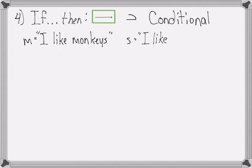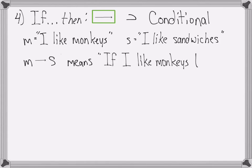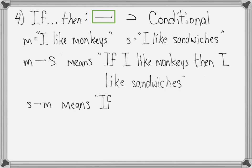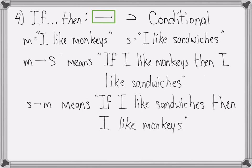For example, using the same variables, the way that we say this out loud is 'm implies s'. That means 'if I like monkeys then I like sandwiches'. We could also write a totally different sentence. 'S implies m' which means 'if I like sandwiches then I like monkeys'. Those two sentences are very different.